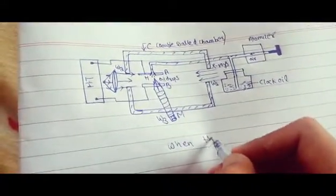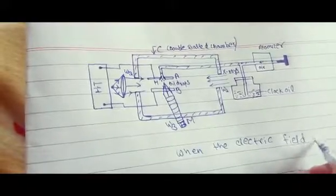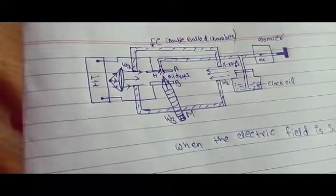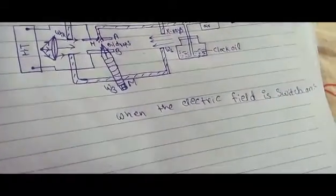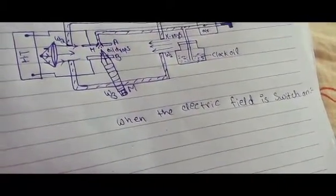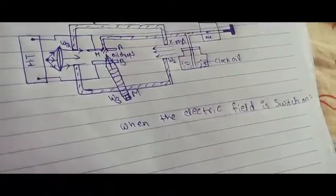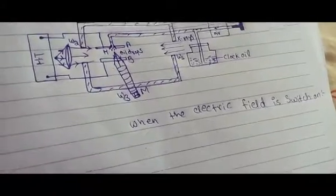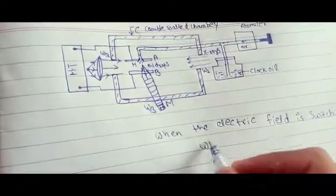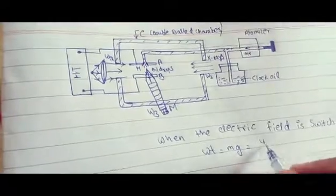The first case is when the electric field is switched on. When the electric field is switched on, the upper terminal velocity acts under three forces. In this case, the drop does not move downward but moves in the upward direction. The weight of the drop is Mg.